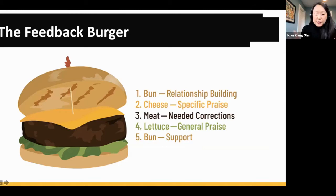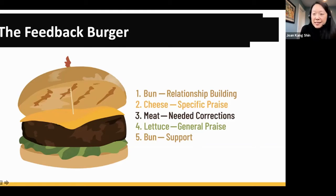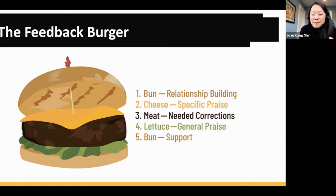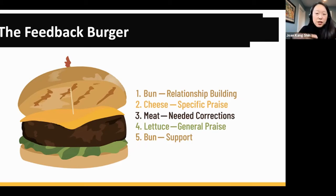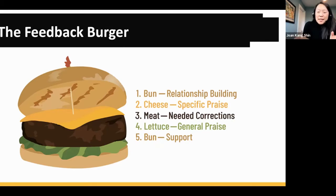The feedback burger works like this: the bun is relationship building, the cheese is specific praise, the meat is the core of your feedback — something that might need correction, the lettuce is general praise, and the final bun is support at the end with a bit more praise. So it starts positive and ends positive.